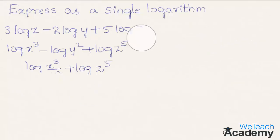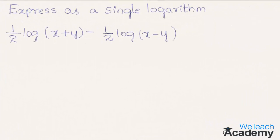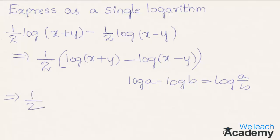Now let us proceed with one more example as a single logarithm. The given example is (1/2) log(x+5) minus (1/2) log(x−y). Here 1/2 is common for both terms, so we can write (1/2) × [log(x+5) minus log(x−y)]. Using the law of quotient, this becomes (1/2) × log[(x+5)/(x−y)].